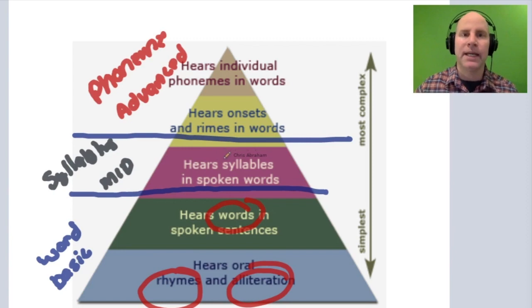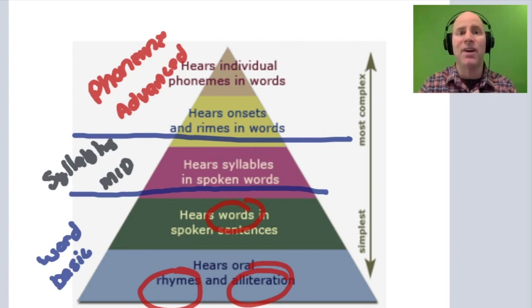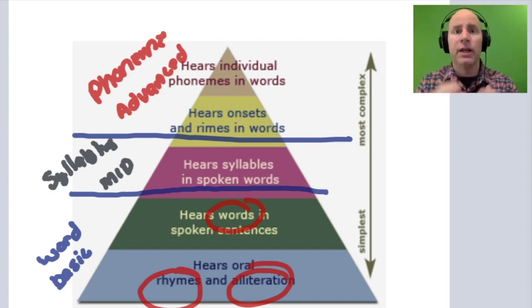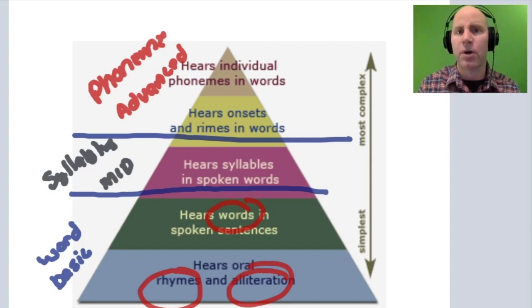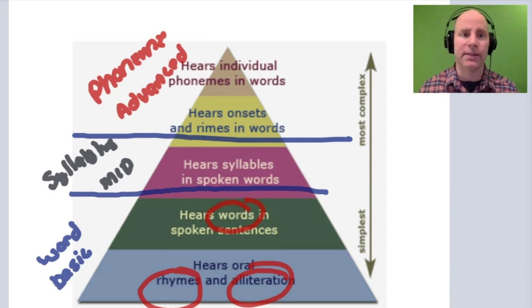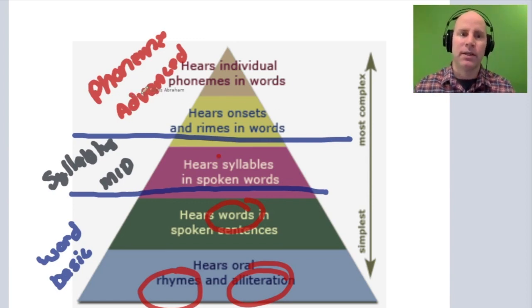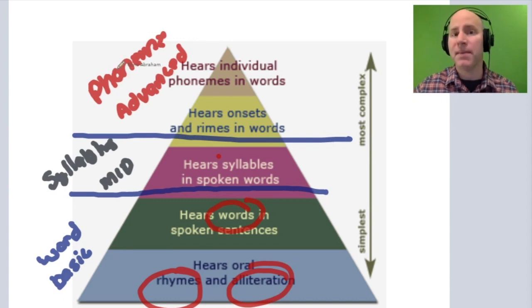Intermediate phonological awareness is when a child is able to clap out or identify the syllables within a specific word — for example, 'wonderful' has three syllables. Any observation of syllables in words spoken orally is intermediate phonological awareness. And anything to do with phonemes falls under phonemic awareness.